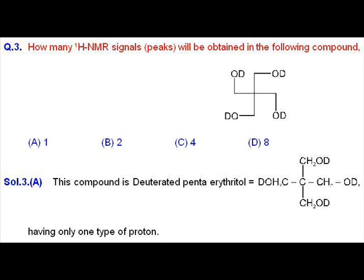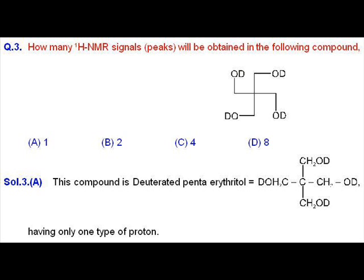Question number 3, which oxide is having highest oxidation state, should be most acidic. So answer should be C and CrO3 should be most acidic oxide of chromium.